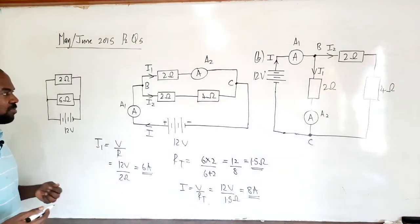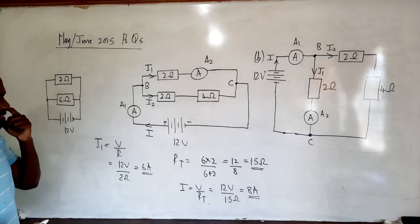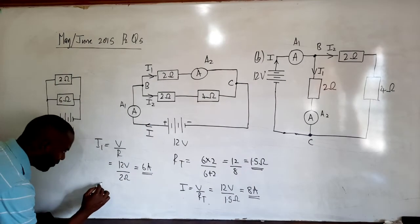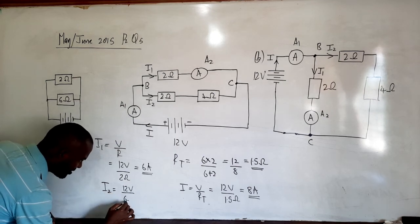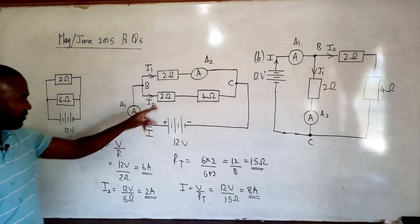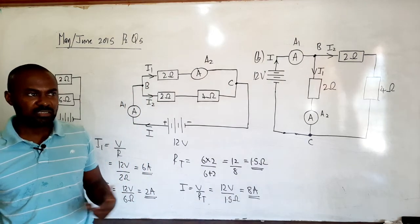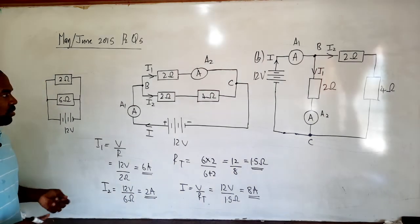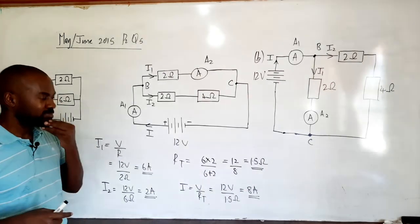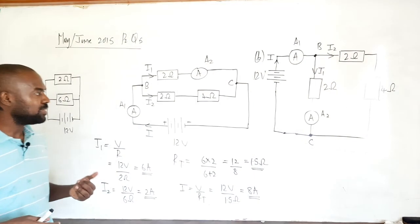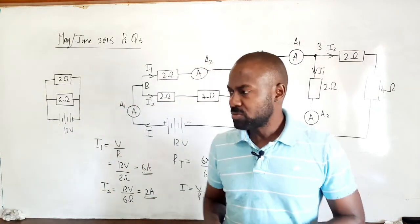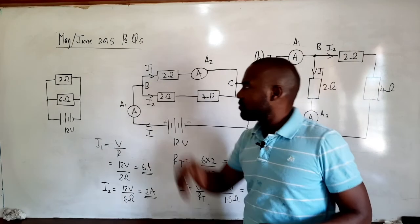Just to verify: the current i2 through the series combination of 2-ohm and 4-ohm (6 ohms total) is i2 = 12 volts / 6 ohms = 2 amperes. Notice that i1 + i2 = 6 + 2 = 8 amperes, which equals the total current — confirming our calculations. This was Paper 2 Question 5 from May/June 2015.